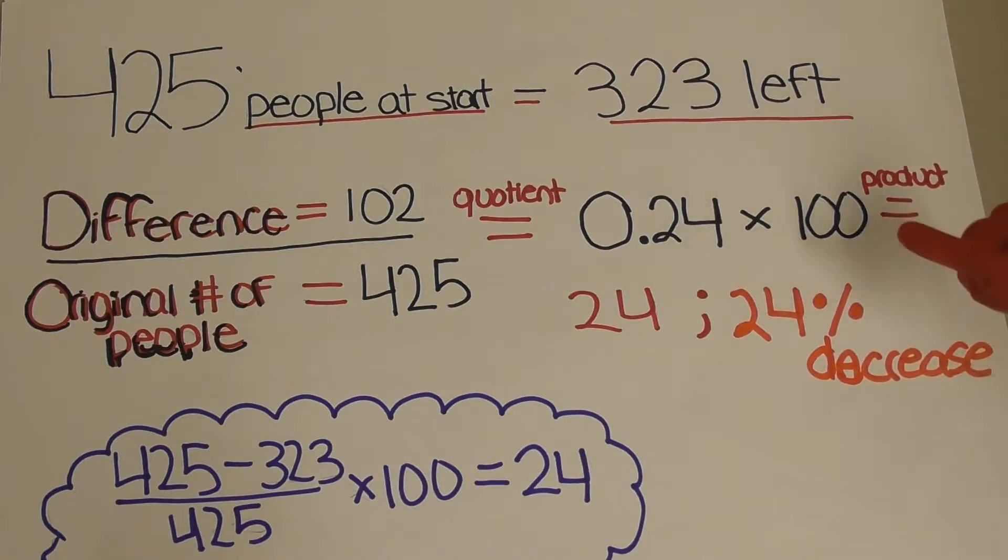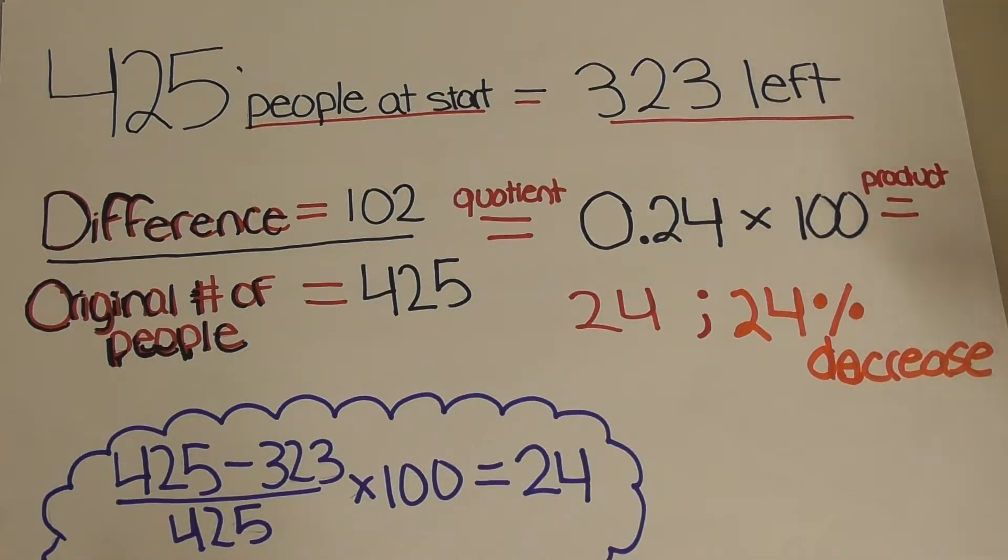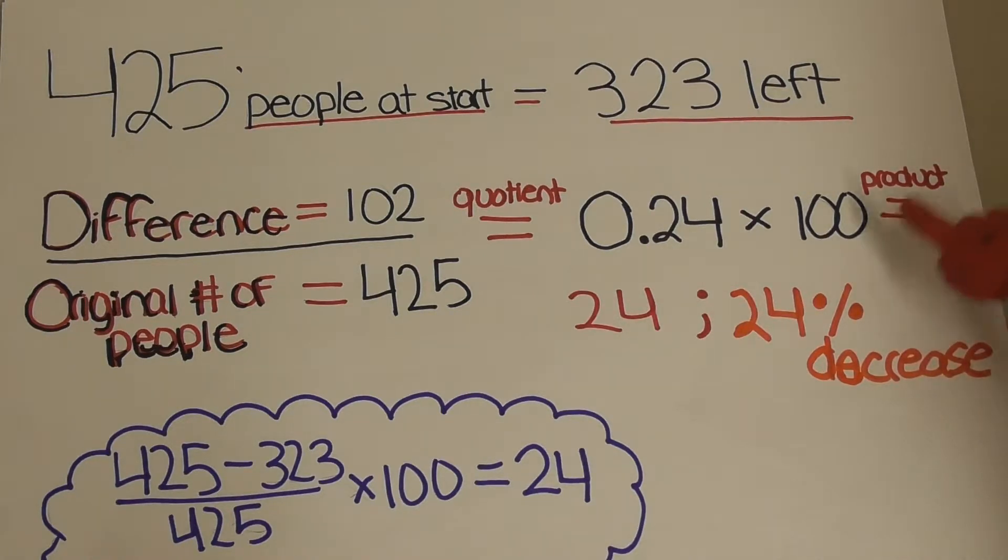We must now convert this decimal to percent, so you can multiply the value by 100 to get a product of 24.